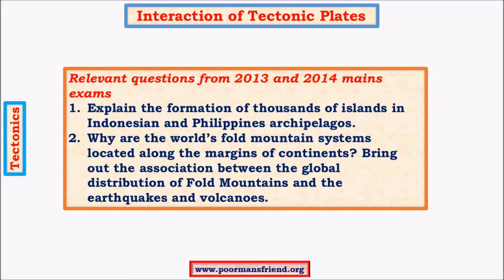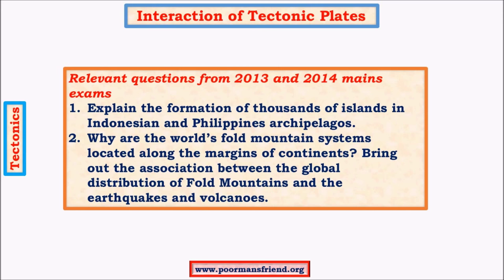Before that, let's check a few questions asked in previous mains examinations closely related to interaction of plates. The first question is: explain the formation of thousands of islands in the Indonesian and Filipino archipelago. The second: why are the world's fold mountain systems located along the margins of continents — bring out the association between global distribution of fold mountains and earthquakes and volcanoes. Both these questions are directly related to convergent plate boundaries, and two such questions were asked from convergent plate boundaries in the previous two exams. In the future, an important question would be about the Great African Rift System as well as the formation of great African lakes. Looking at these questions, you can understand the complexity with which UPSC asks questions in mains.